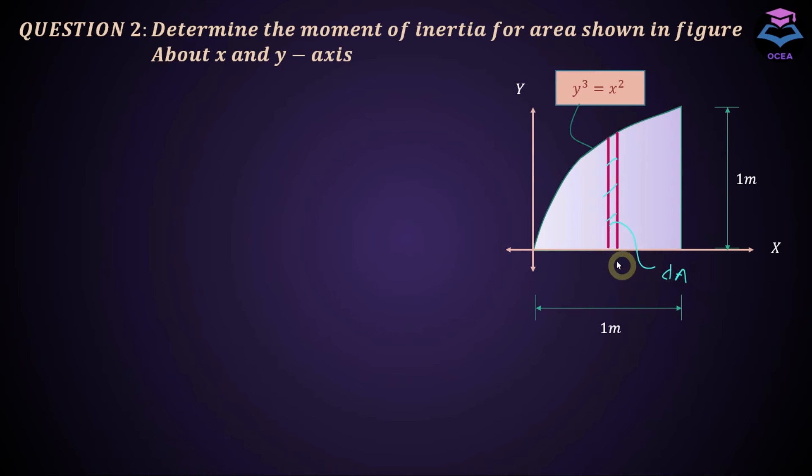So this is our da element and this will be this differential width will be dx and this point is x comma y and this is the point where your differential area intersects with your curve that is y cube equals to x square and using generalized equation i y is equal to integral x square da and da from here so insert this da into this generalized equation this becomes integral x square y into dx.